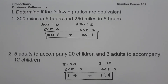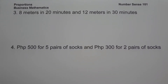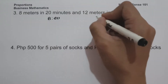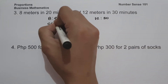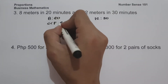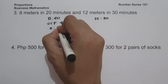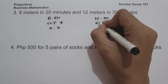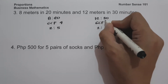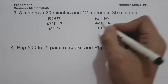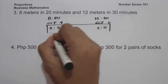On example number three: 8 meters in 20 minutes and 12 meters in 30 minutes. We compare 8 is to 20 against 12 is to 30. The GCF between 8 and 20 is 4, giving 2 to 5. The GCF between 12 and 30 is 6, giving 2 to 5. Since we have the same ratio, therefore they are equivalent.